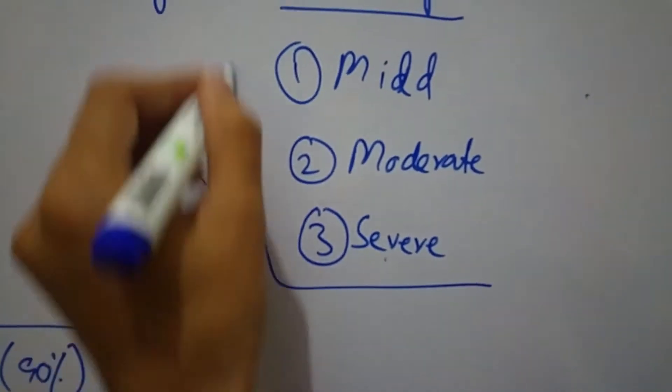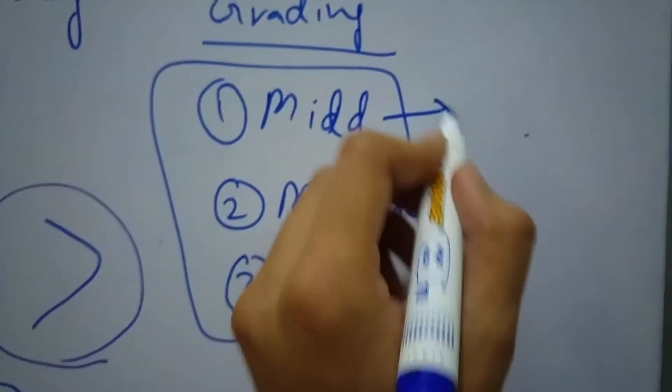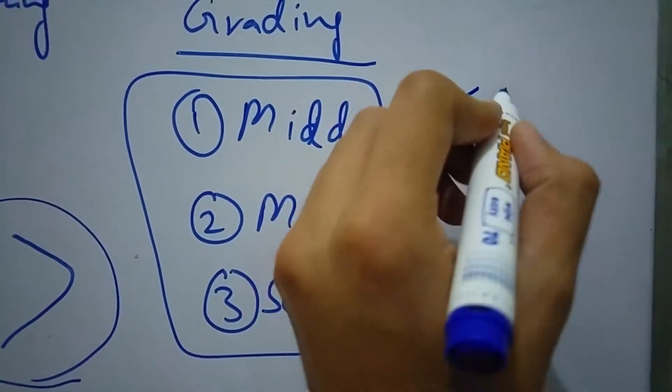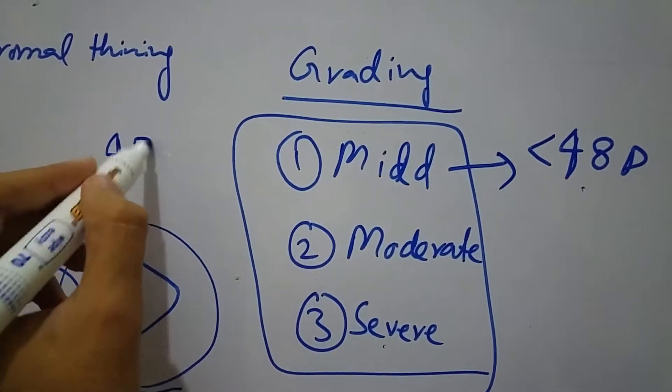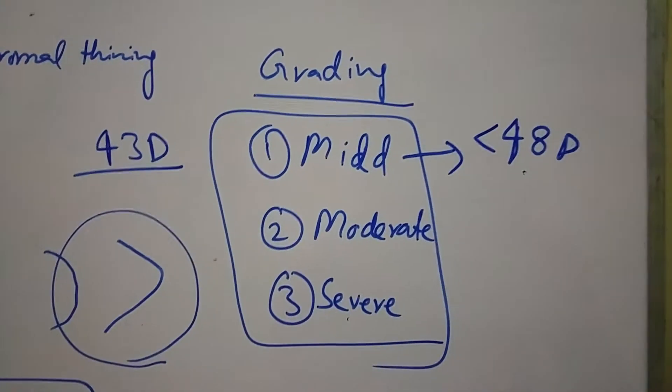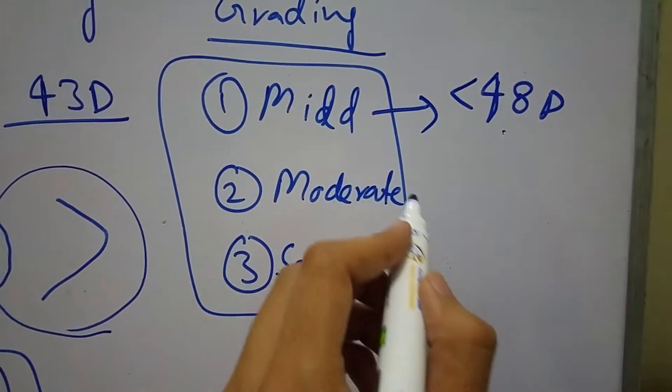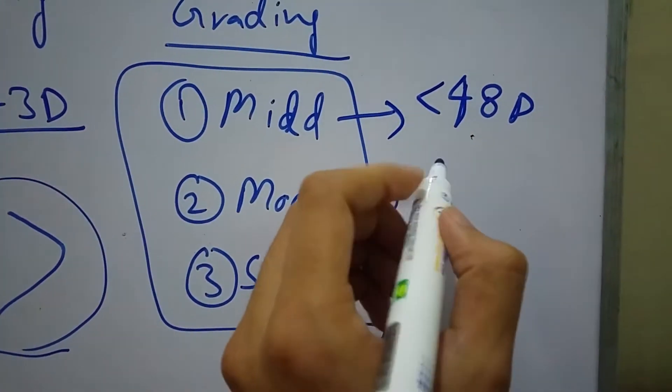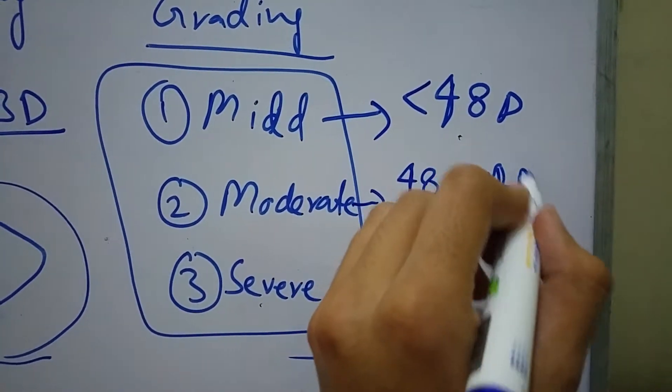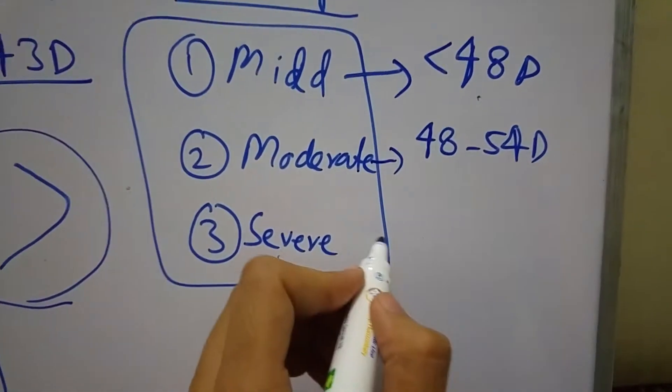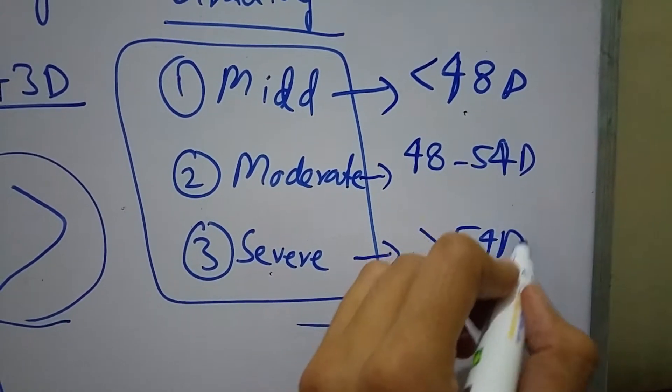This classification is on the basis of keratometric readings. In mild, the corneal power is less than 48 diopters. Normally the power of the cornea is 43 diopters, so less than 48 diopters means there is mild keratoconus. In moderate keratoconus, the corneal power is between 48 to 54 diopters. And in severe, the corneal power is more than 54 diopters.